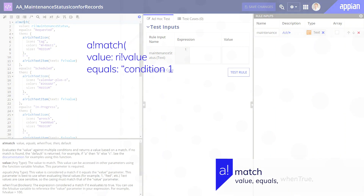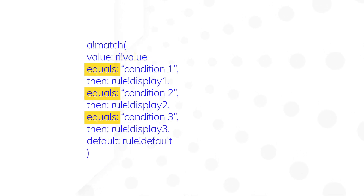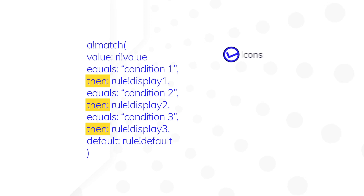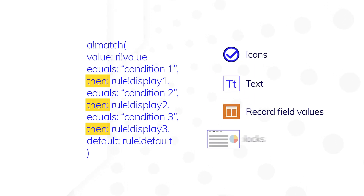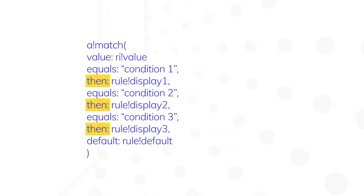This function is one of our favorites. It allows you to check a value against multiple conditions and then display the appropriate element — icons, text, record field values, or specific UI blocks based on a match. After the match is found, the function will stop evaluating. If there's no match, the function will display a default value.